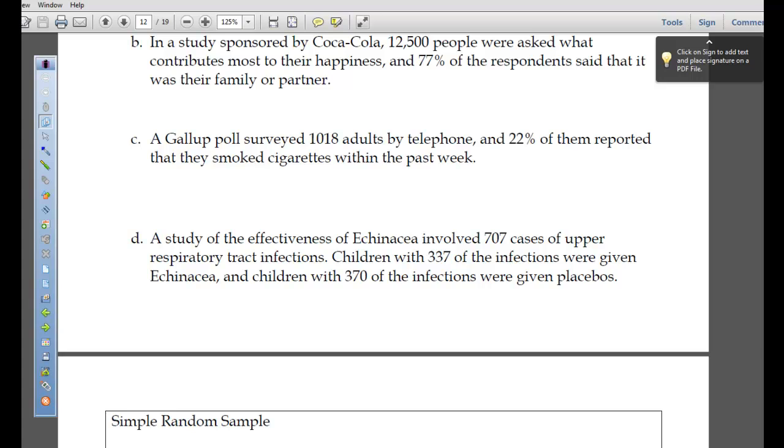A study of the effectiveness of echinacea involved 707 cases of upper respiratory tract infections. Children with 337 of the infections were given echinacea, and children with 370 of the infections were given placebos. What is this? An experiment.